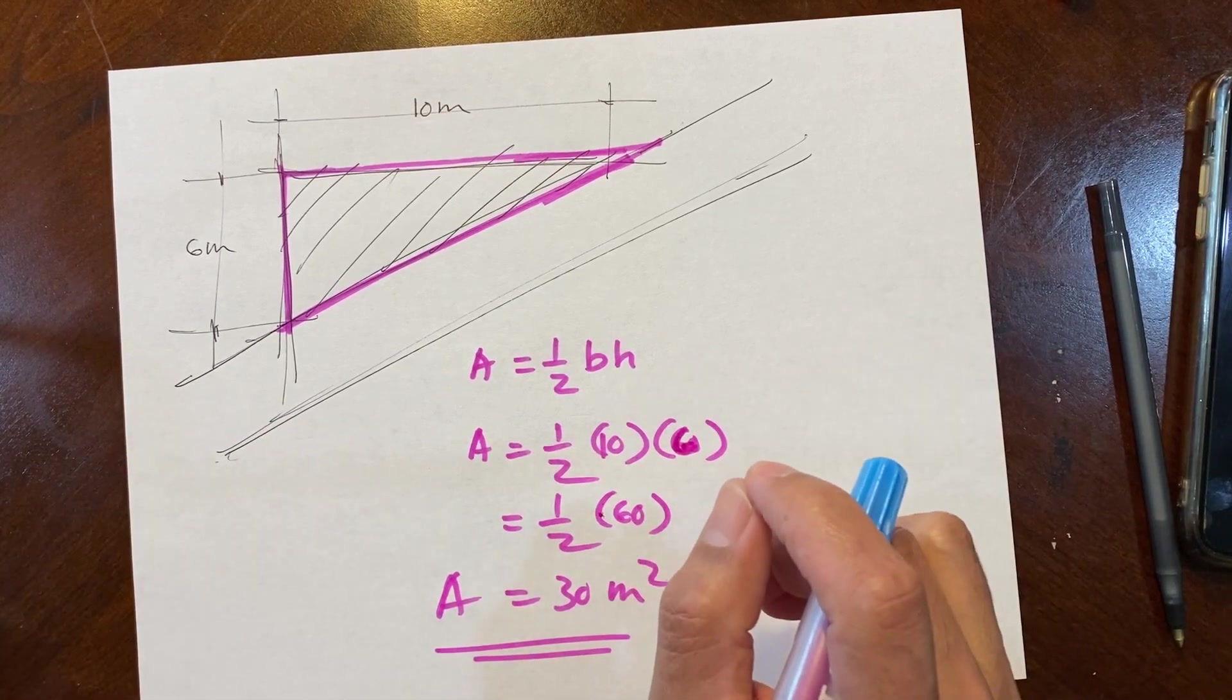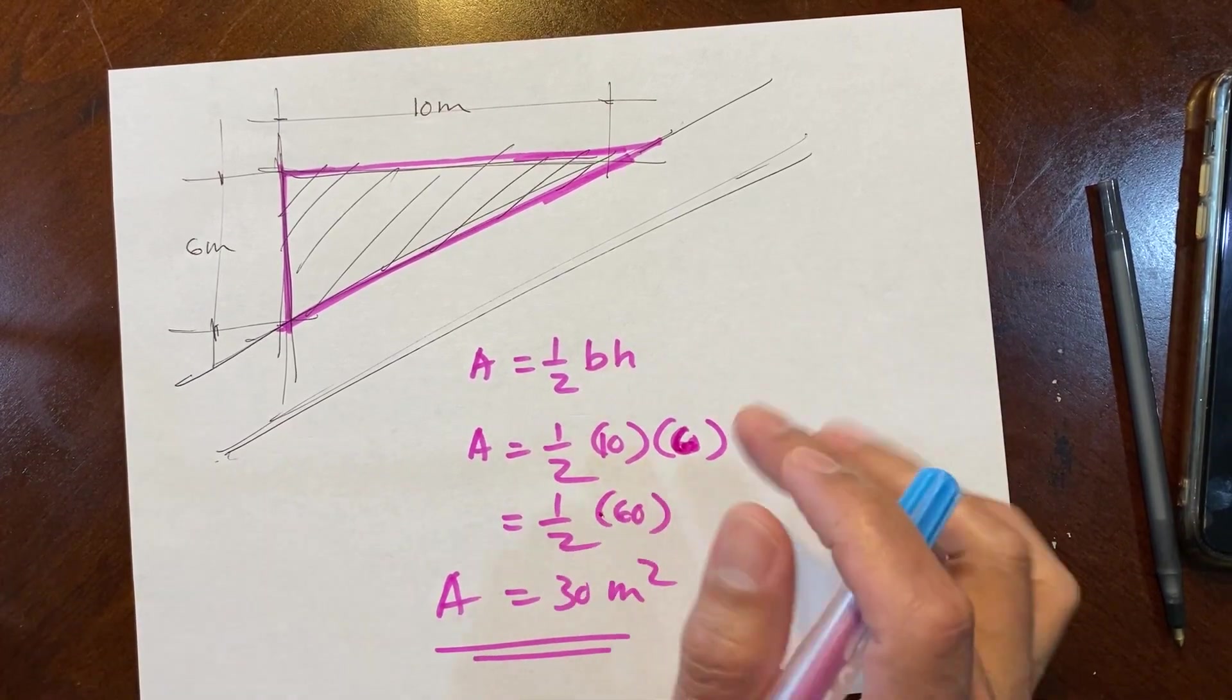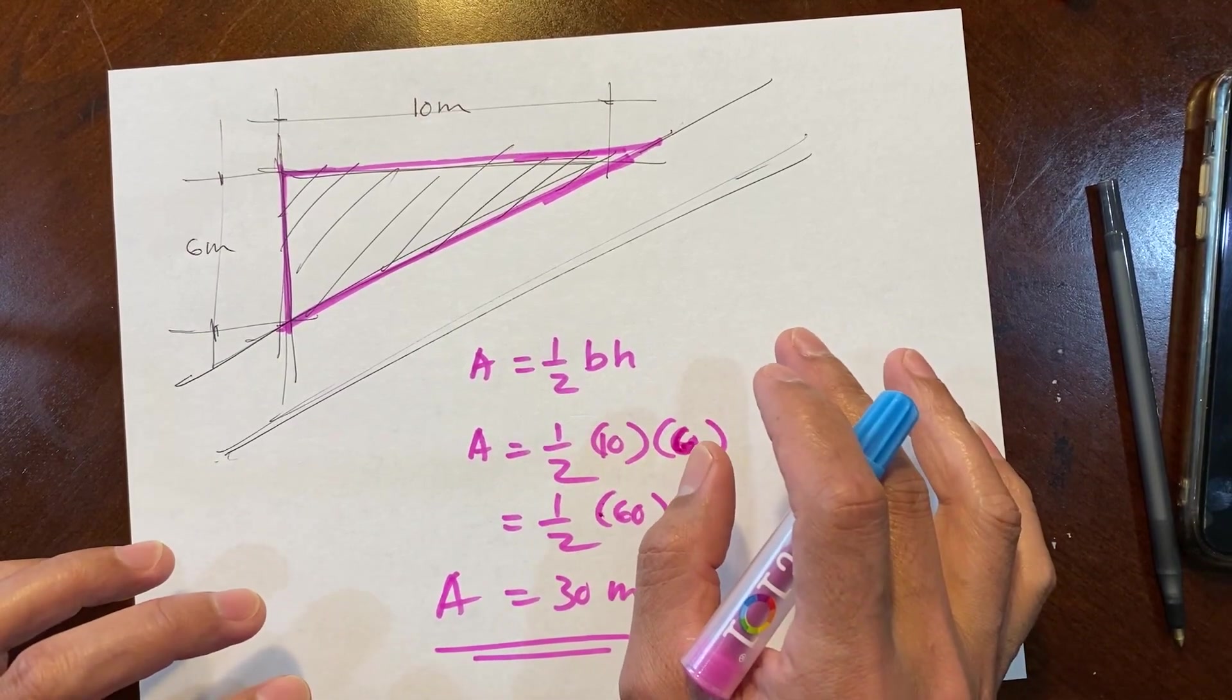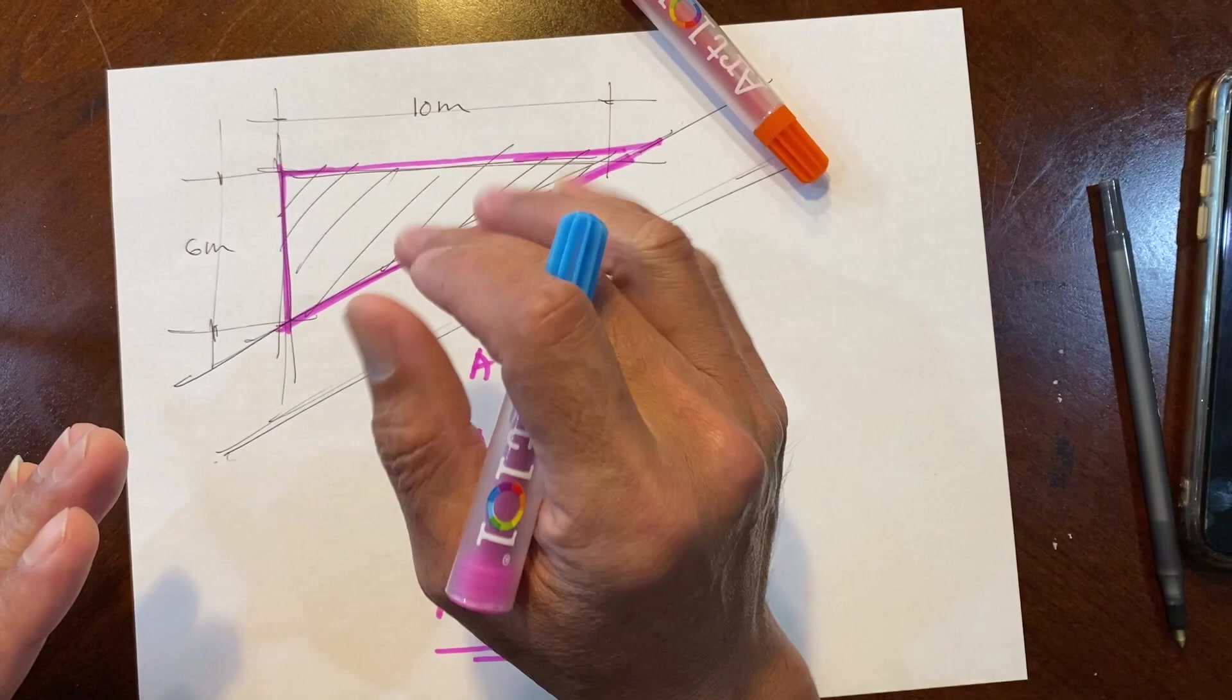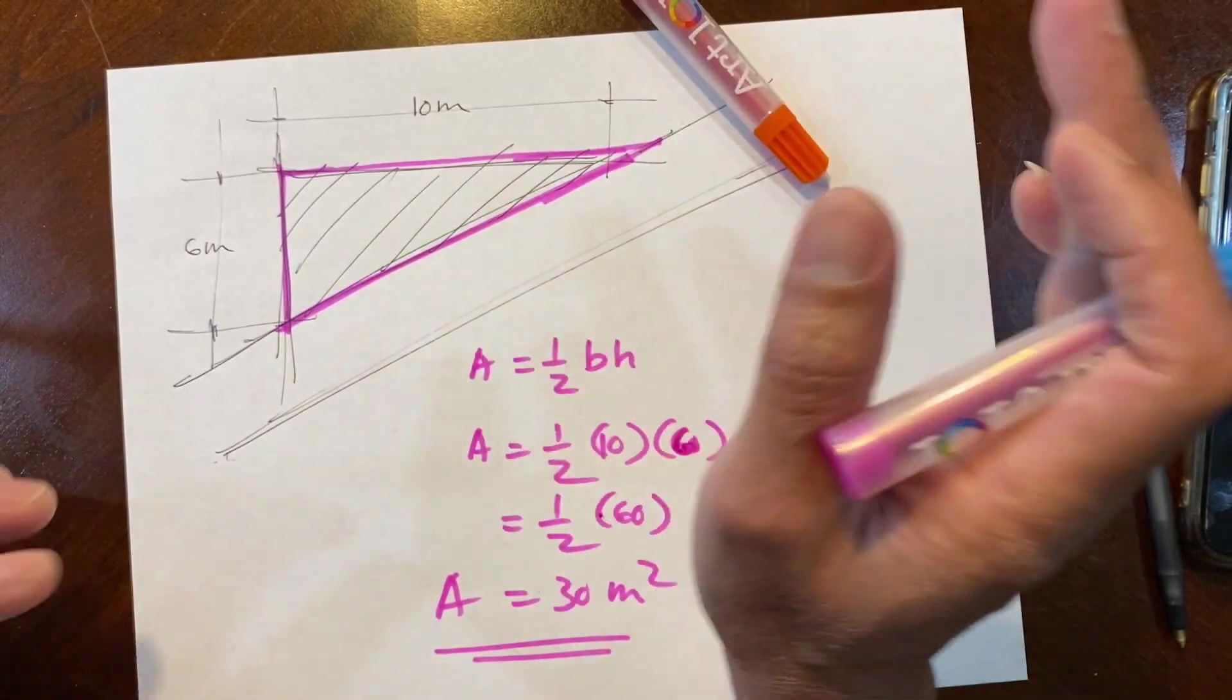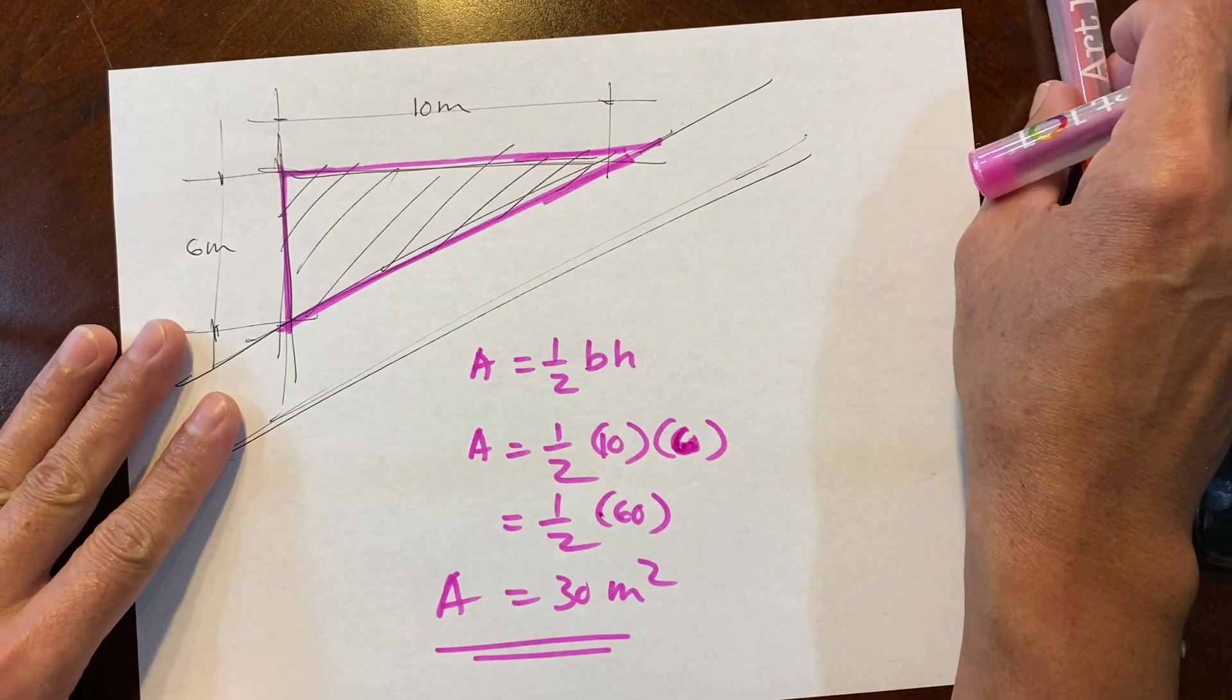Triangle formula is one-half base times height, trapezoid is A plus B over 2 times the height, and rectangle is length times width. That is very simple. That is for the vlog today. Thank you for watching, I love you guys, we will see you in the next one. Peace up.